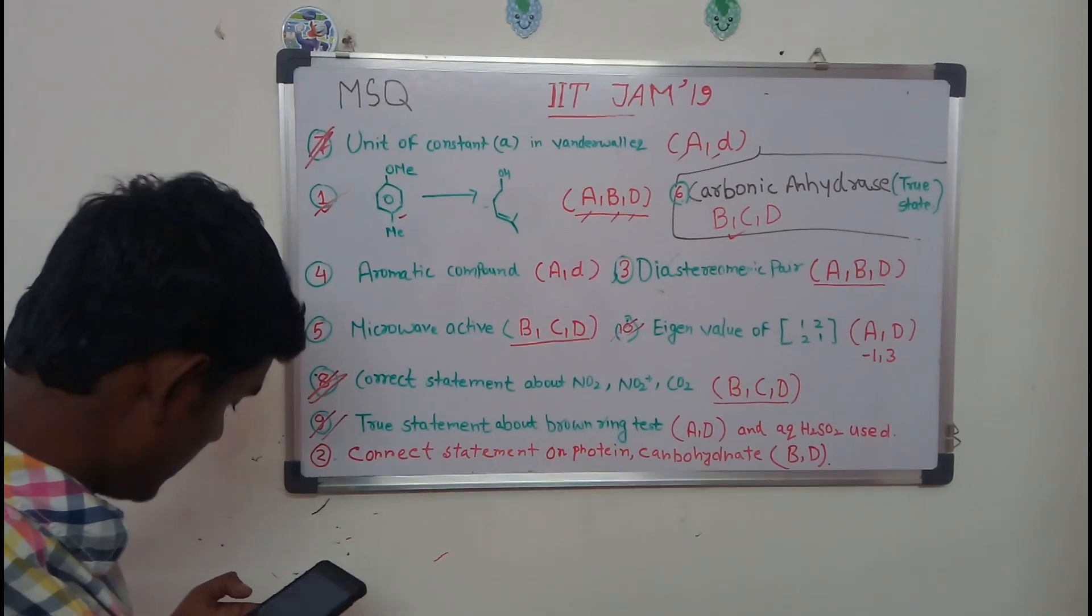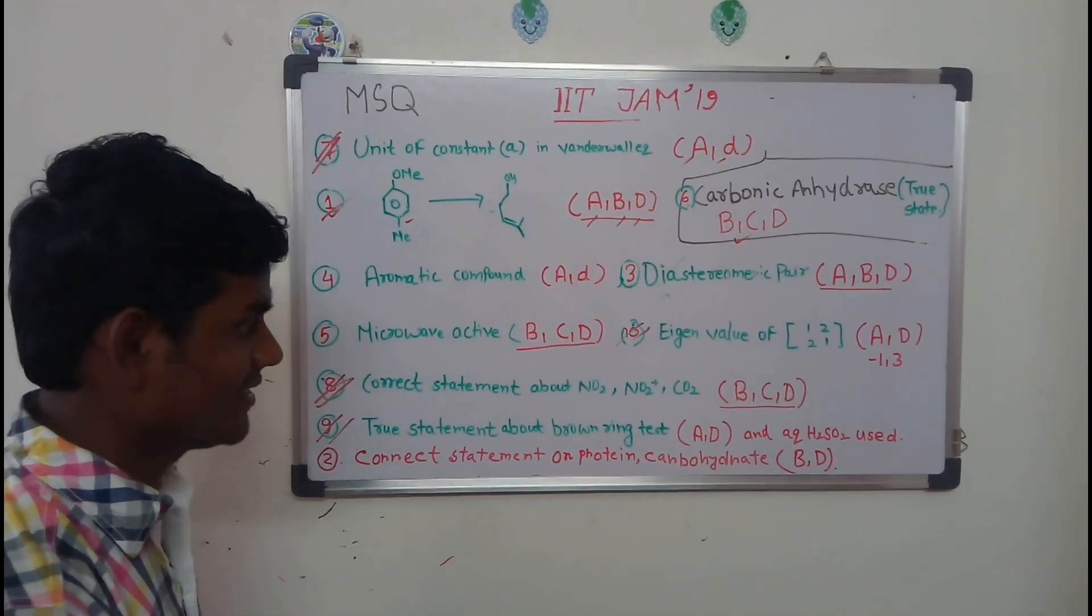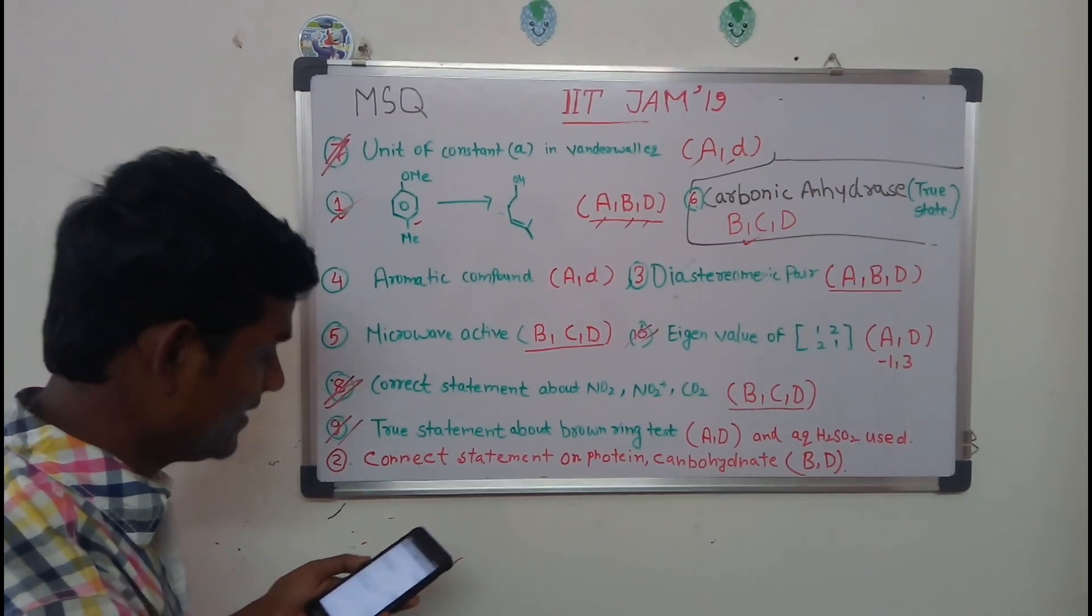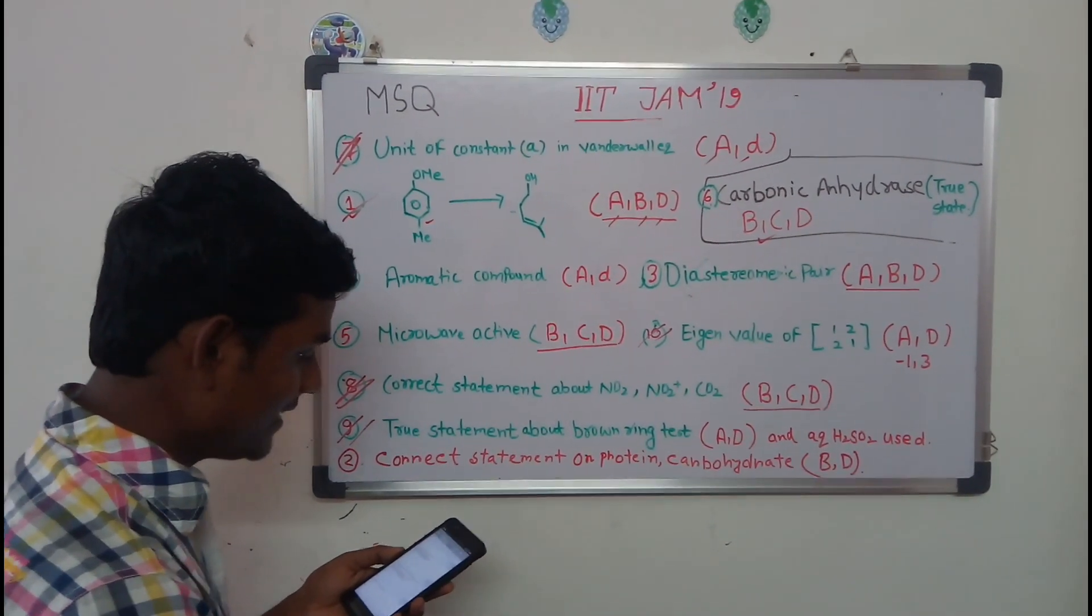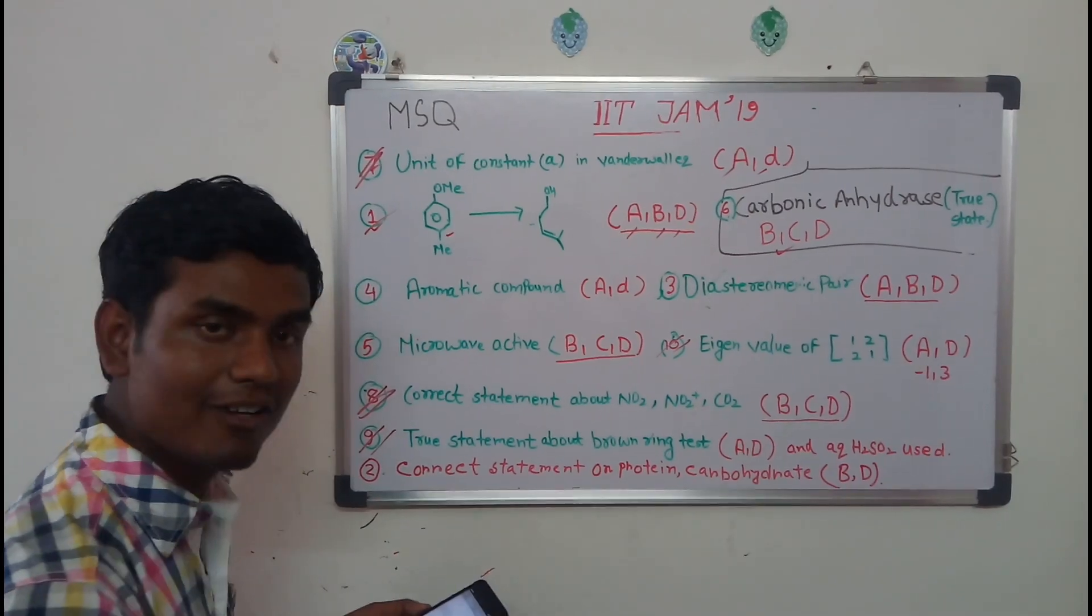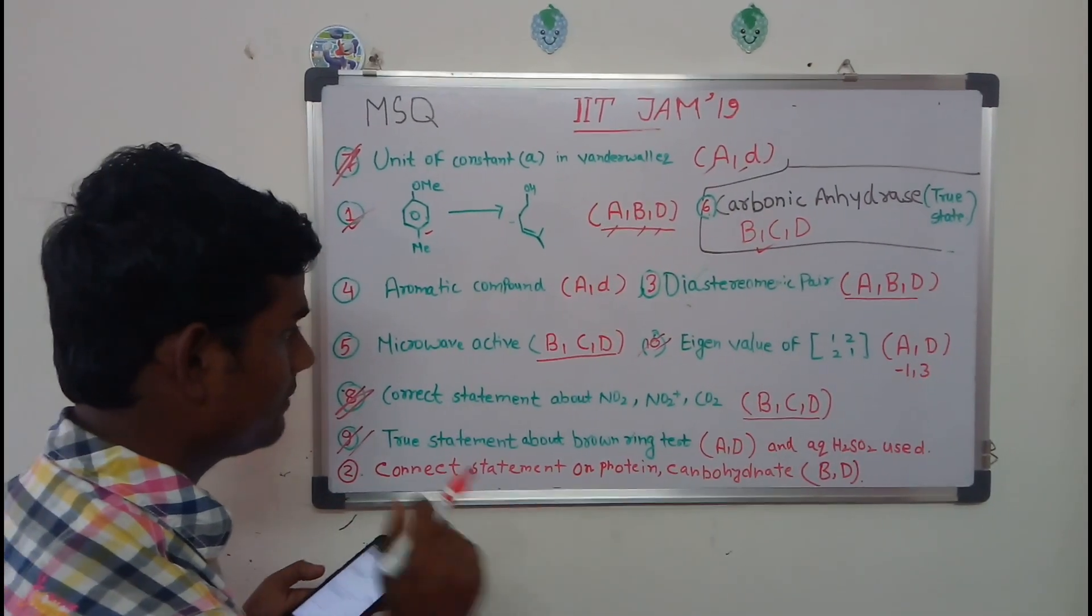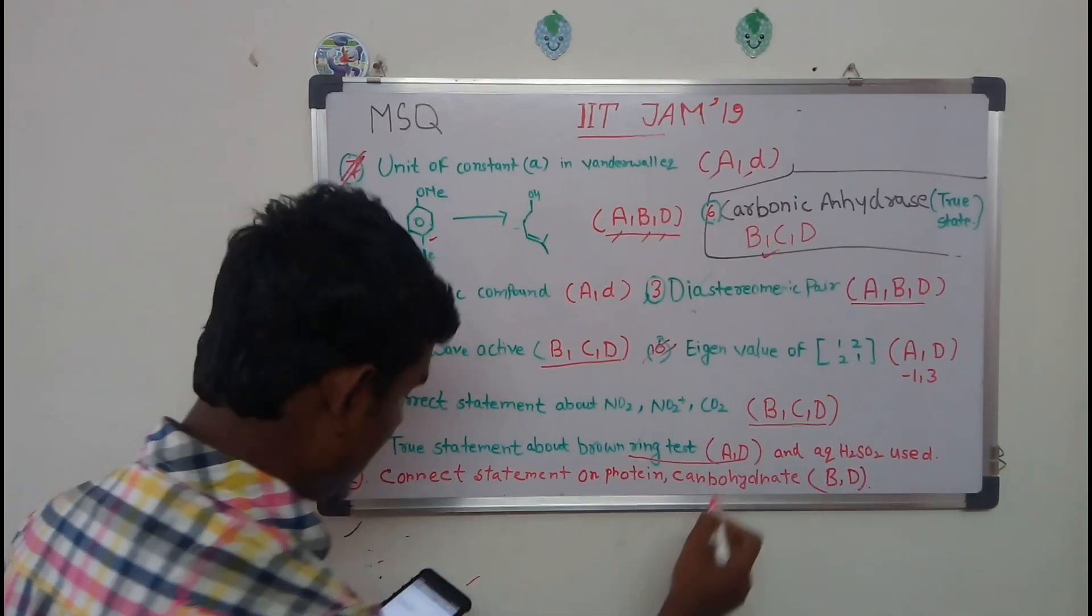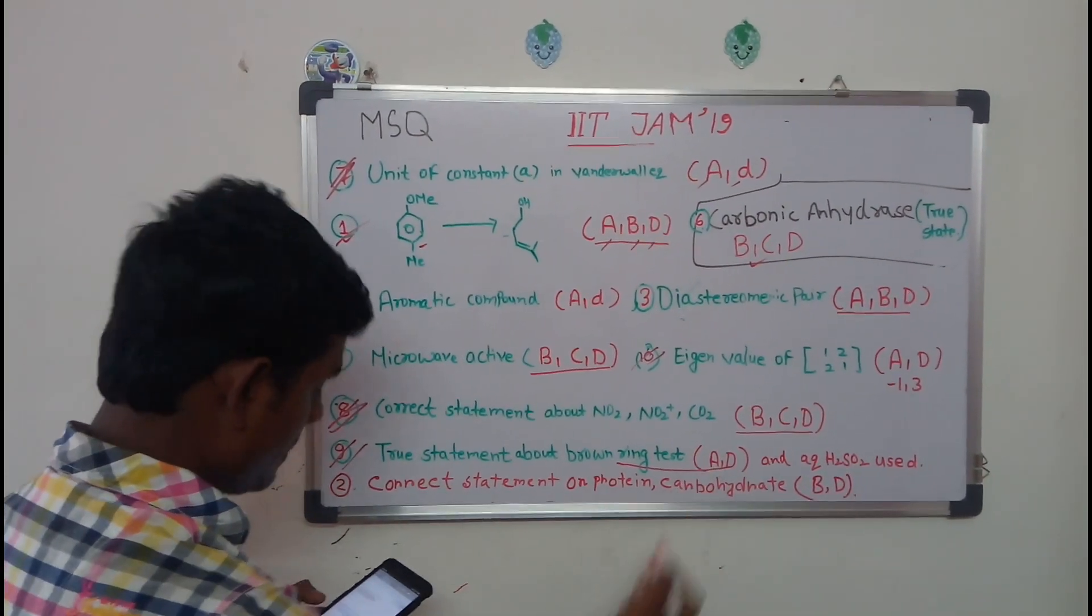And the next, that is question nine, is brown ring complex. It's very easy. Option C is very tricky. They have given CN a whole five - it's definitely wrong, so C is definitely wrong. That's why the answer is A and D. Of course B is also wrong because nitric acid is not used.